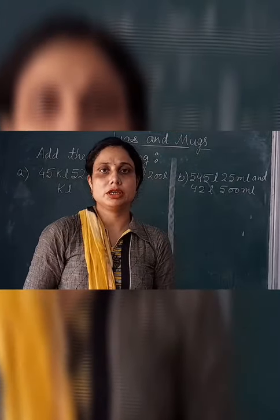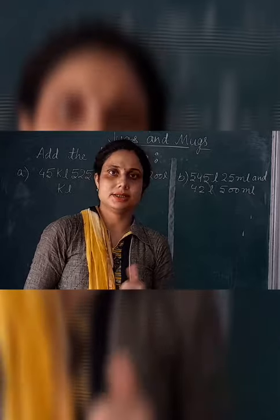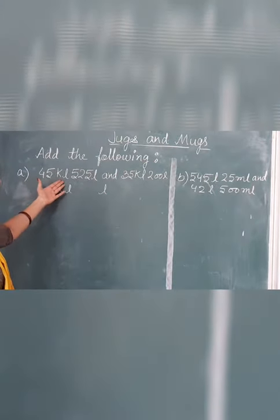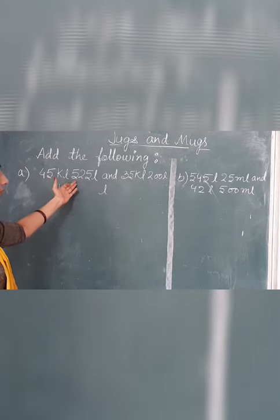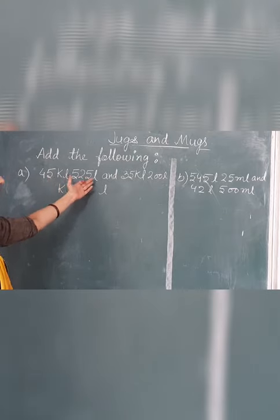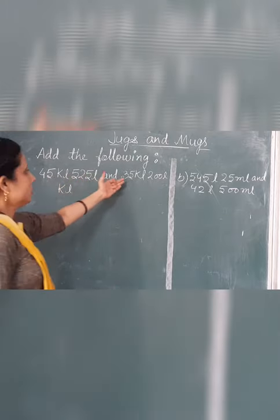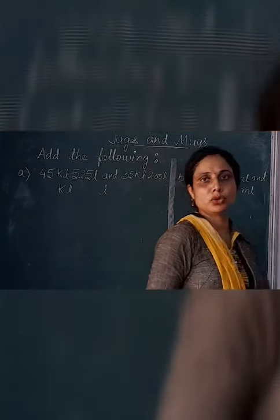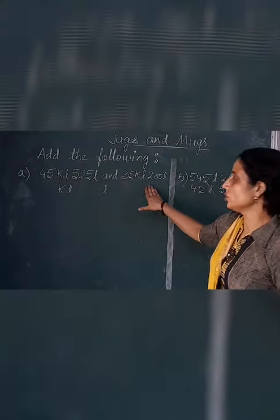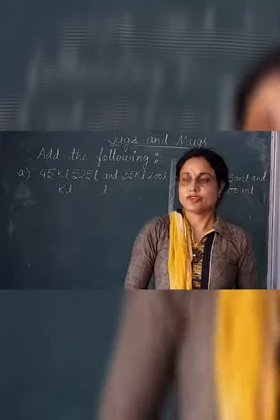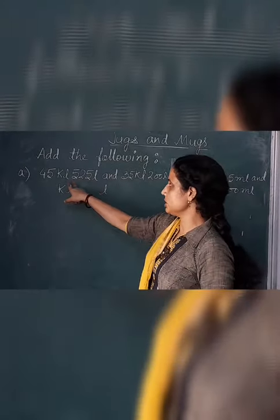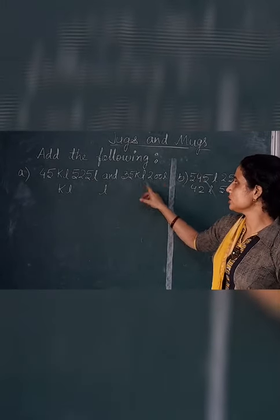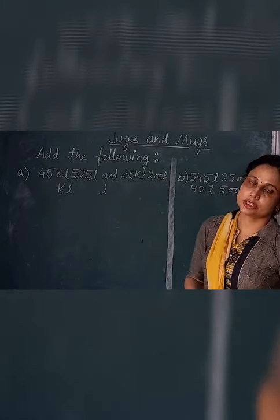Capacity can have different measuring units. How do we add in this class? The first question is 45 kiloliters 525 liters and 35 kiloliters 200 liters. We will add these two units.